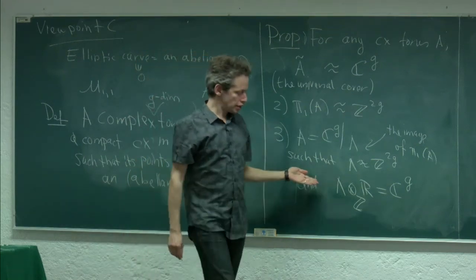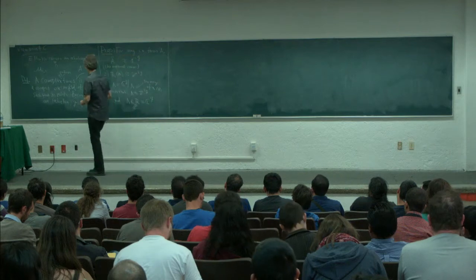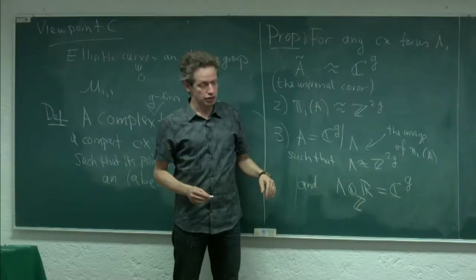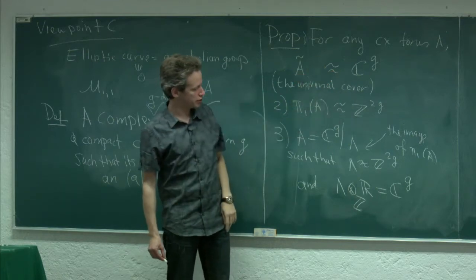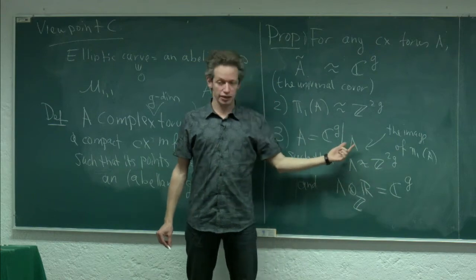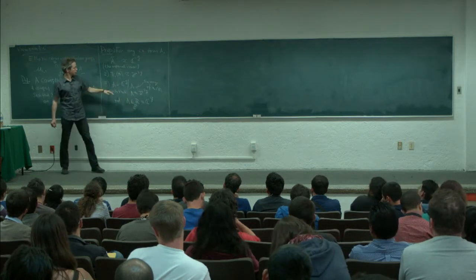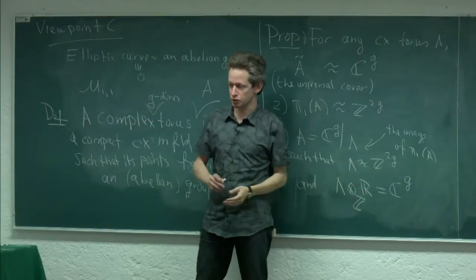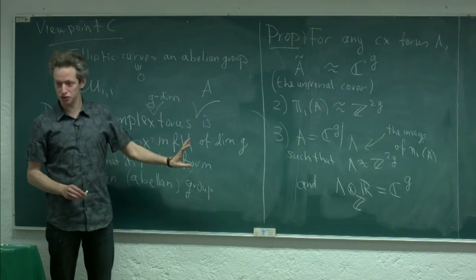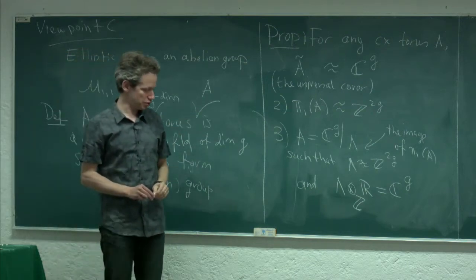This is a direct generalization — the proof for elliptic curves is purely topological and makes no difference whether you're working in dimension 1 or dimension g. What this tells you is that if you have a complex torus, its universal cover is always C^g. The fundamental group must act preserving the group structure, so the group must be an embedded subgroup of C^g — meaning it must be a lattice. This is imposed by the fact that your quotient must be a compact complex manifold.